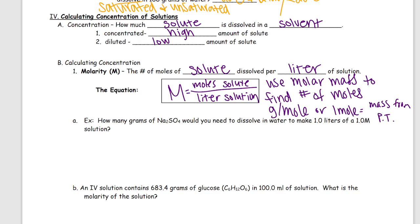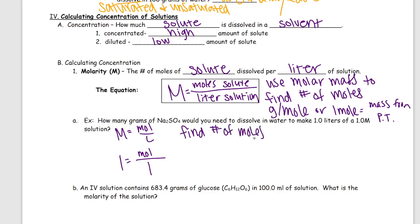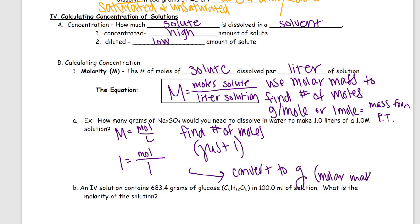Example A: How many grams of sodium sulfate would you need to dissolve in water to make one liter of a 1.0 molar solution? Our equation is molarity equals moles per liters. I want it to be one molar, and it's asking for grams. We need to find moles first — we can get grams at the end. In one liter of that solution, this question is basically asking for the molar mass of that compound. So we would find moles, which in this case is just one, and convert that to grams using the molar mass conversion.